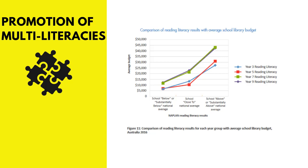Using your own school data as well as data collected through research and reports such as the Softlink School Library Survey is important to convince others of the role of the teacher-librarian and the school library in this area. This graph and the one following are examples of the type of data collected by the Softlink Survey. The first graph shows the comparison of reading literacy results with average school library budgets. As you can see, there is a correlation between the greater budget and the performance on the NAPLAN reading literacy test.